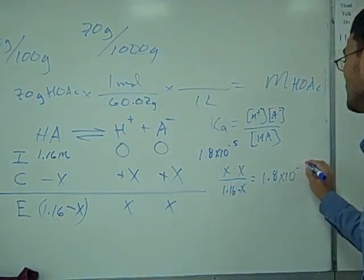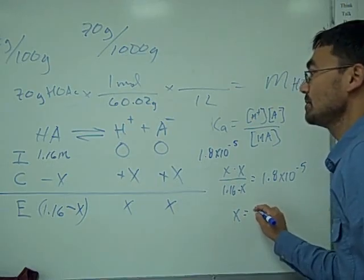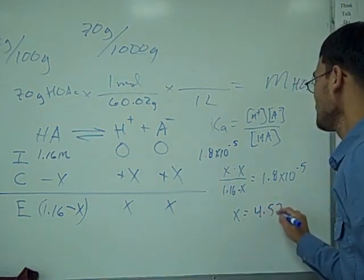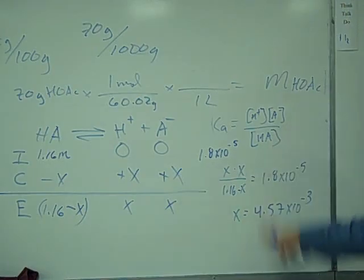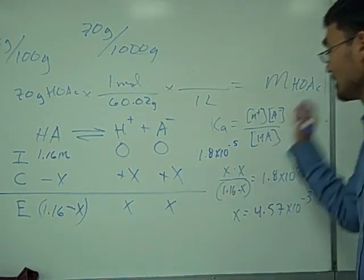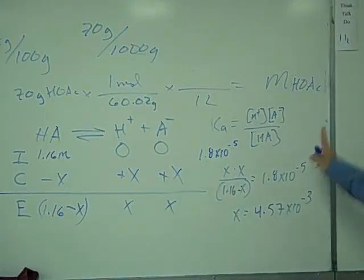So if you run all the algebra through on that, you're going to get x is actually equal to 4.57 times 10 to the negative 3. I typically don't tell people how to do algebra, but I'm assuming you guys will find a way through. This one's a quadratic expression. There are several shortcuts on your calculators that allow you to generate that value solving for x.